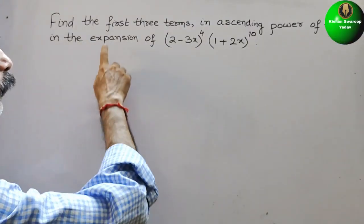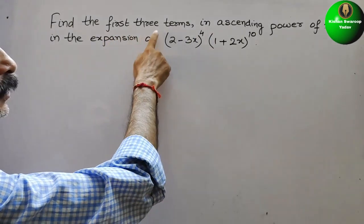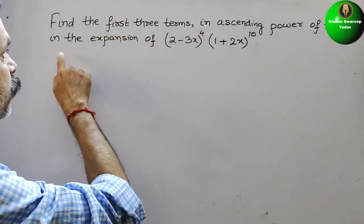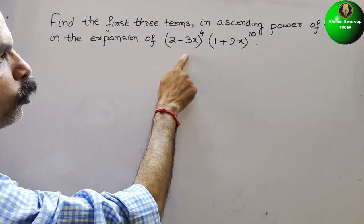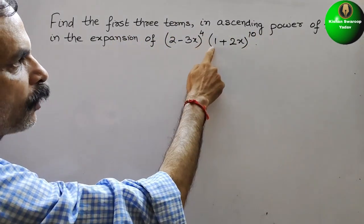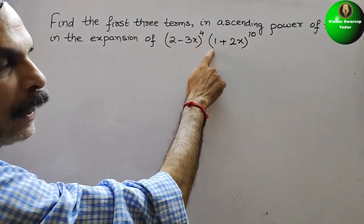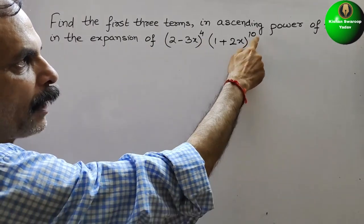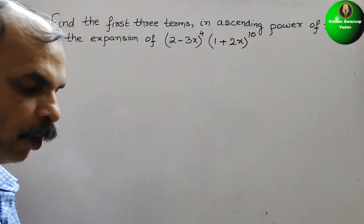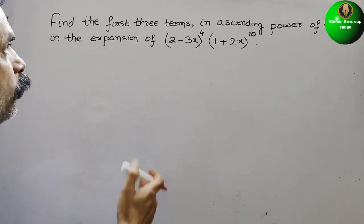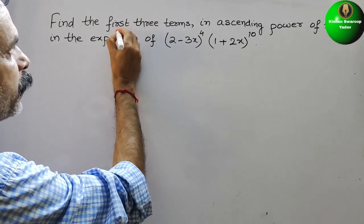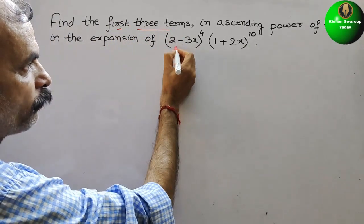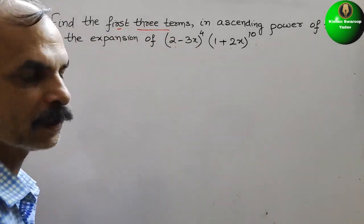The question is to find the first three terms in ascending powers of x in the expansion of (2 minus 3x) to the power of 4 multiplied by (1 plus 2x) to the power of 10. We have to find the first three terms of each.